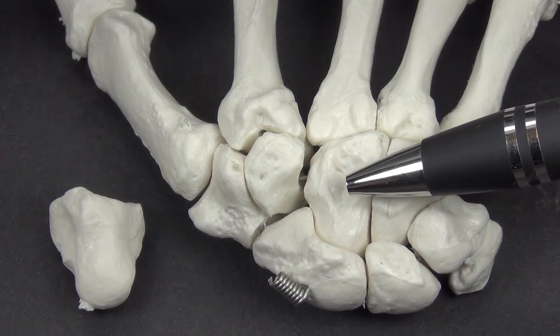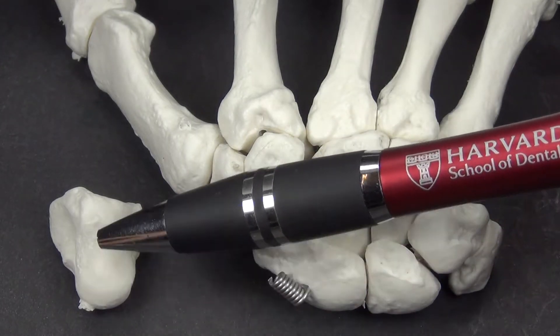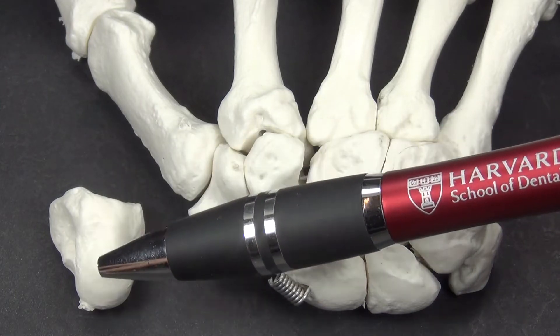The capitate is the largest carpal bone. It is elongated from proximal to distal and thus it contains a longitudinal axis.